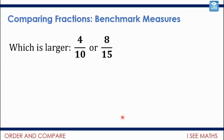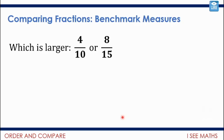There's another technique called benchmark measures. Which one naturally looks larger: four tenths or eight fifteenths? You could make each fraction out of 150, but the calculation is quite challenging. My suggestion using benchmark measures is to think about a half. Four tenths is actually less than half, because 4 is less than halfway to 10. Eight fifteenths is more than half, because 8 is more than halfway to 15. I don't even need to find equivalent fractions or do any calculation — I just know eight fifteenths must be more than four tenths. My benchmark is a half.